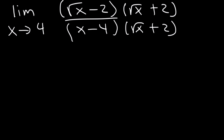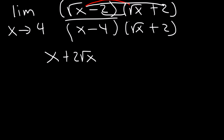So on top, we're going to FOIL. The square root of x times the square root of x is the square root of x squared, which simplifies to x. Then root x times 2 is positive 2 square root of x. The next terms give negative 2 root x. And finally, negative 2 times negative 2 is negative 4.